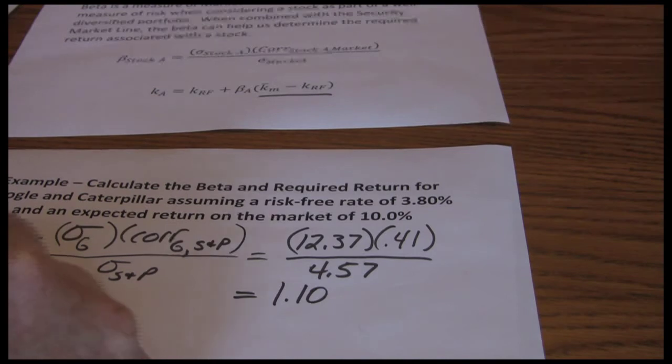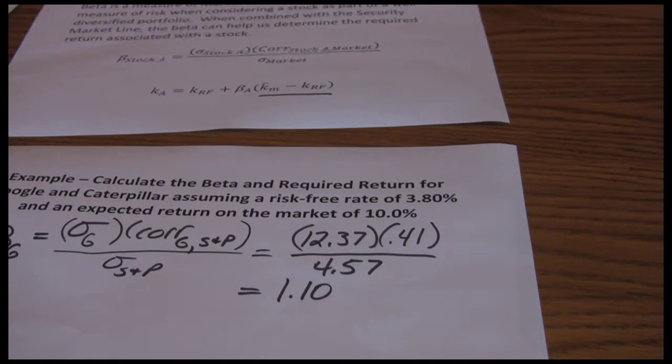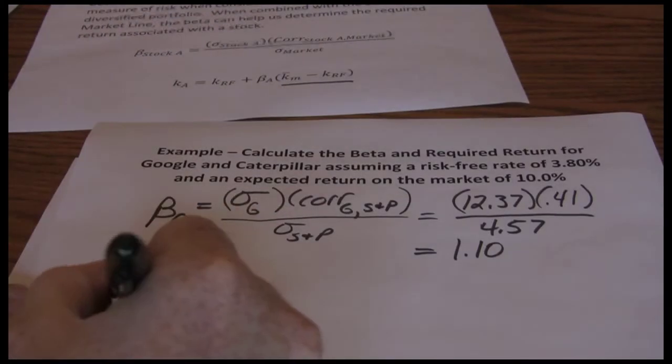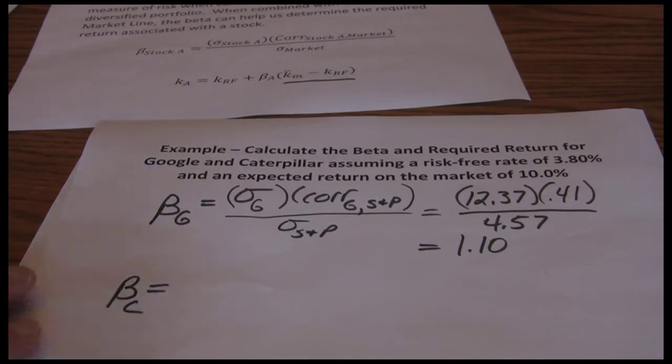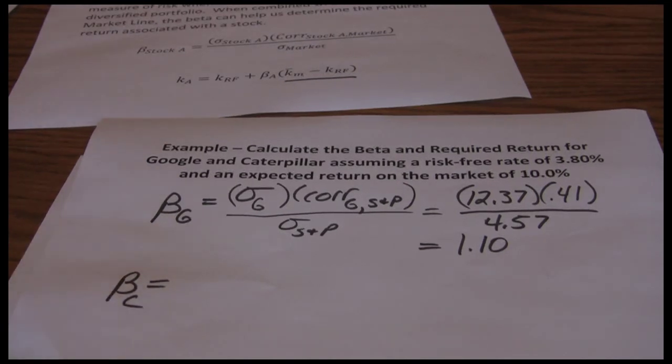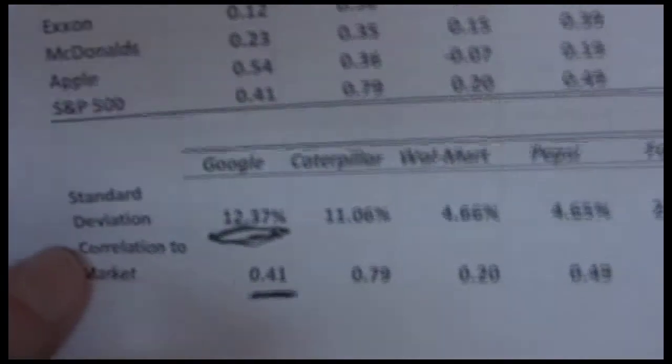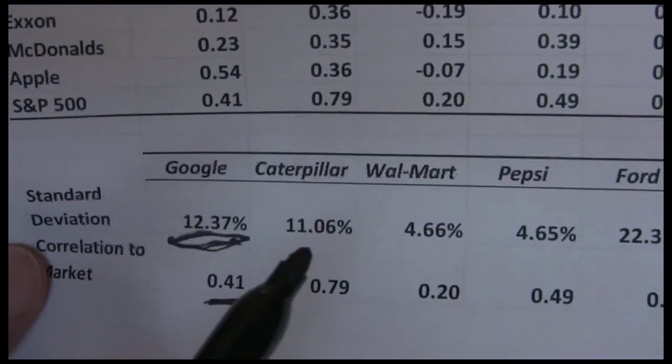And now real quick, we'll do the beta for Caterpillar. So we have the beta for Caterpillar. Again, same process, standard deviation for Caterpillar. Standard deviation for Caterpillar is 11.06.